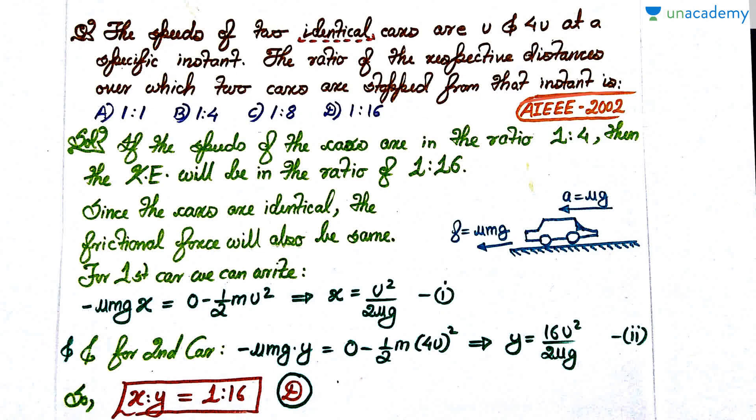The ratio of respective distances over which the two cars are stopped from that instant is—these are the options. This was asked in AIEEE 2002. As usual, pause the video, attempt the question, and then we'll discuss the solution.